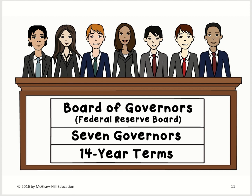Among the seven Board of Governors, the President appoints one of them every four years to be the Chairperson of the Federal Reserve, and that Chairperson serves a four-year term. So every four years, we get a new Chairperson, and each President has a chance to appoint their own. The current Chairperson is Jerome Powell, appointed by President Trump.